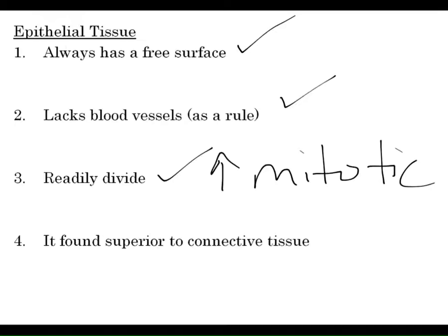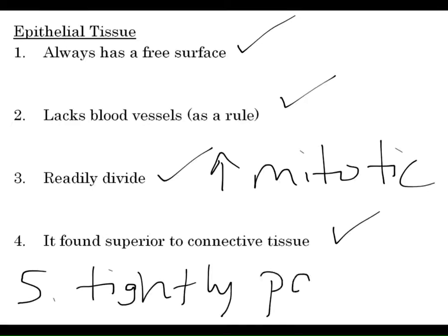Epithelial cells always sit on top of connective tissue — epithelial cells sitting on the basement membrane, and below the basement membrane will always be connective tissue. That's an always-always-always true relationship between epithelial and connective tissues; they're always bordering each other. Finally, these cells are tightly packed — they are touching each other with very little space between cells. We'll see how that compares to connective tissues as we move forward.